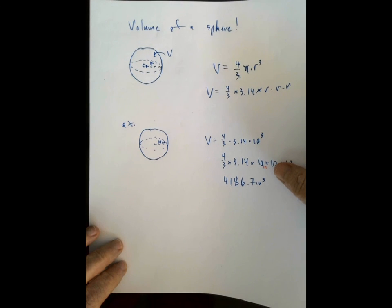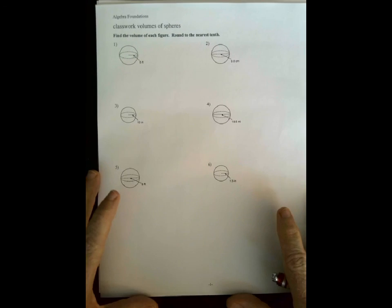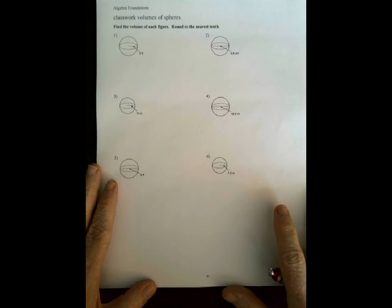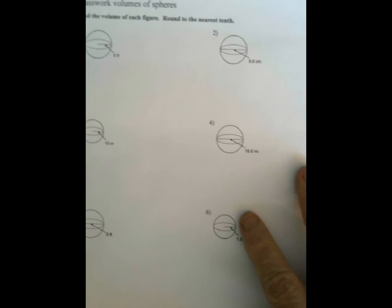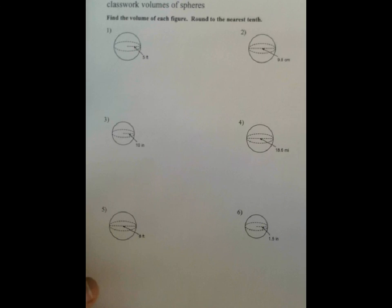All right, now, we're going to try a couple of other examples here on this worksheet that I've got. It's classwork worksheet. Here it comes. Stuck together. Sorry. There it is. Papers are stuck together. Okay, so, that's kind of small. I'm going to zoom in a little bit on it so we can see the top two better. We don't need to see the entire thing all at one time.